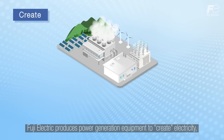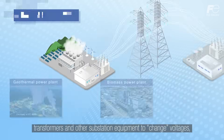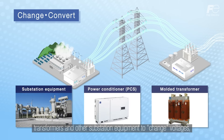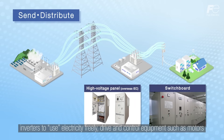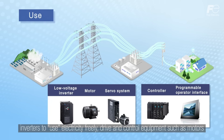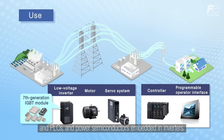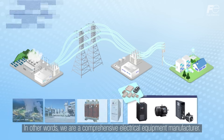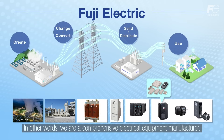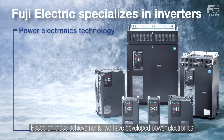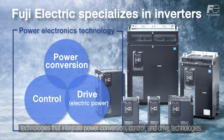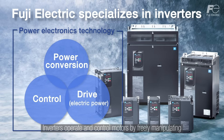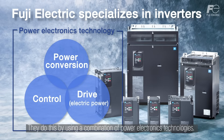Fuji Electric produces power generation equipment to create electricity, transformers and other substation equipment to change voltages, switchboards to send and distribute electricity, inverters to use electricity freely, drive and control equipment such as motors and PLCs, and power semiconductors embedded in inverters. In other words, we are a comprehensive electrical equipment manufacturer. Based on these achievements, we have developed power electronics technologies that integrate power conversion, control and drive technologies. Inverters operate and control motors by freely manipulating the frequencies used in power conversion, using a combination of power electronics technologies. Fuji Electric has used these technologies to become a true specialist in the field of inverters.